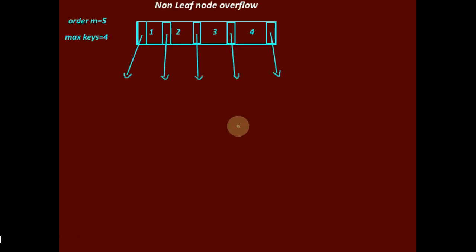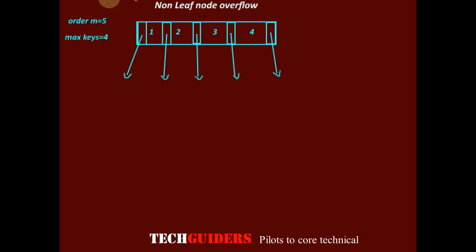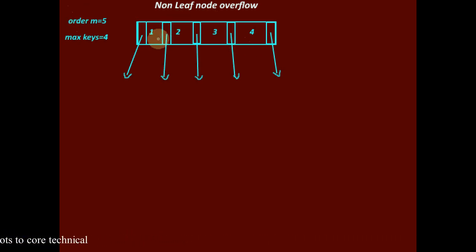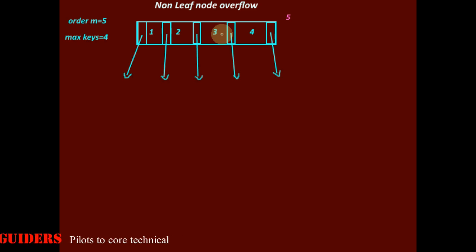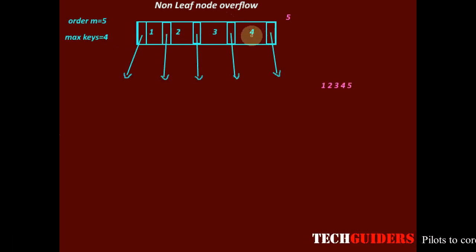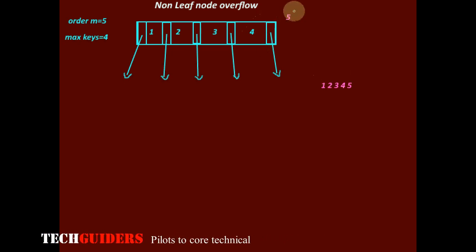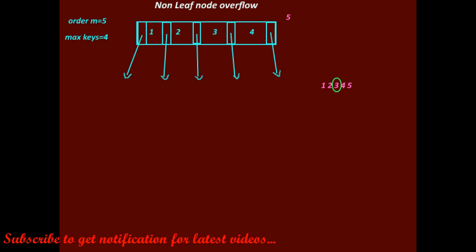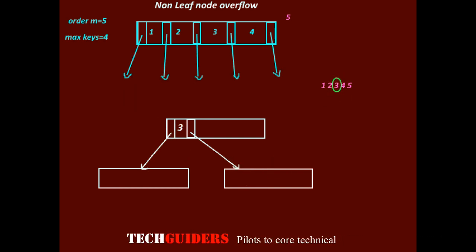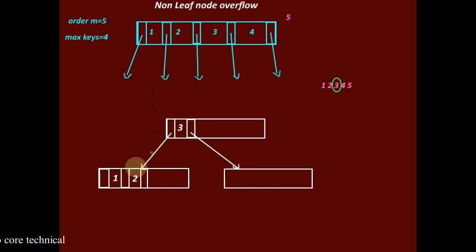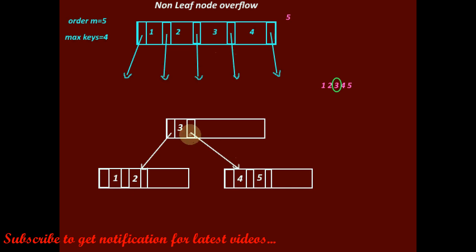Next, let's consider B+ tree insertion on a non-leaf node and how overflow is handled there. Consider a non-leaf node of order M equals 5, meaning it can have a maximum of 5 children and hence a maximum of 4 keys. If this node is full and we try to insert a new key to this internal node, an overflow will occur. To handle the overflow, consider all keys of this non-leaf node in sorted order including the new key, and find the mid key. The node is split into two, the mid key is pushed to the parent, keys less than the mid move to the left, and keys greater than the mid move to the right.